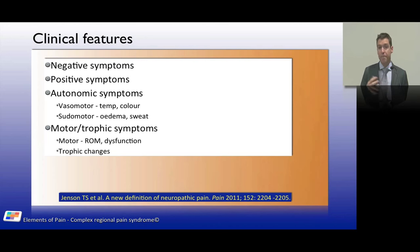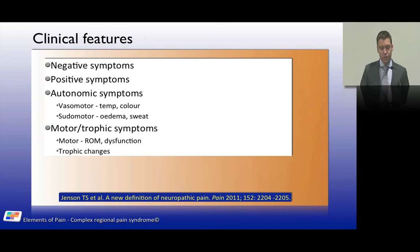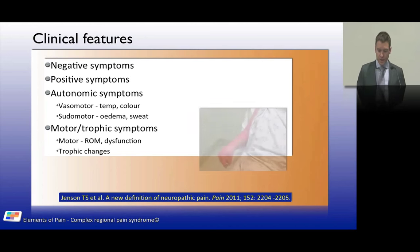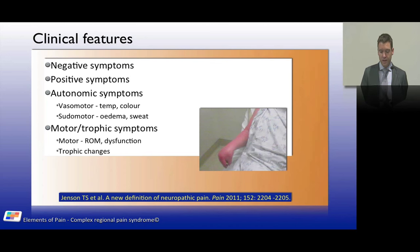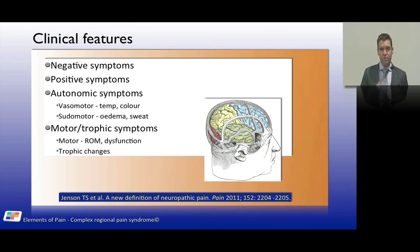The negative features include hypoesthesia and sensory changes. Positive symptoms include hyperalgesia and allodynia. There are also autonomic changes — temperature and color changes, edema, and sweating changes, reflecting vasomotor and pseudomotor activity. Motor and trophic changes can be quite severe; in advanced cases patients have a wasted, contorted peripheral limb and may even neglect that extremity — a condition called hemispatial neglect.